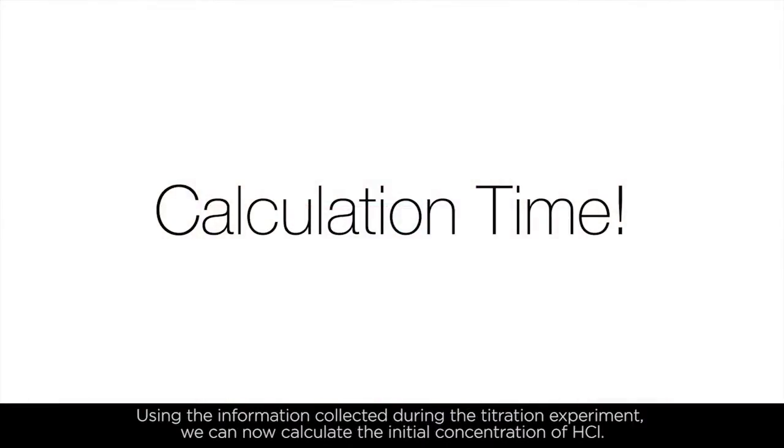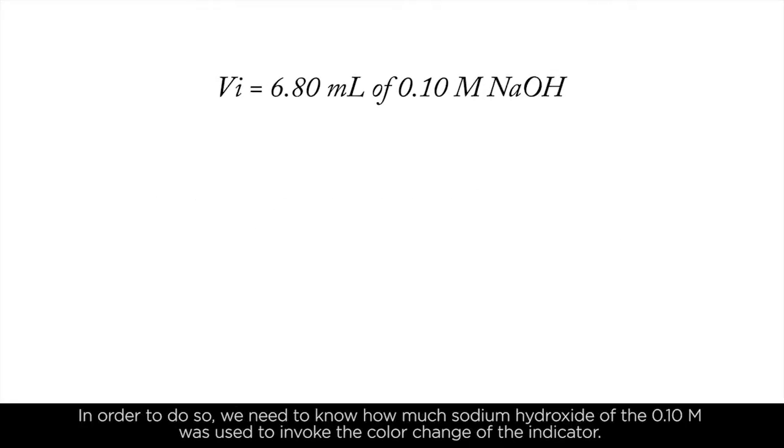Using the information collected during the titration experiment, we can now calculate the initial concentration of HCl. In order to do so, we need to know how much sodium hydroxide of the 0.1 molar was used to invoke the color change of the indicator.